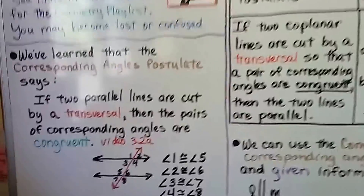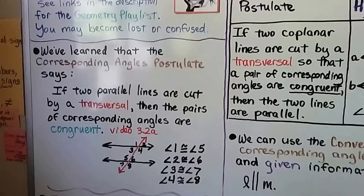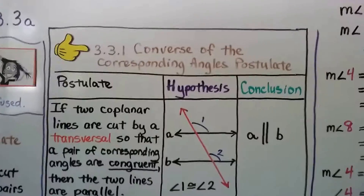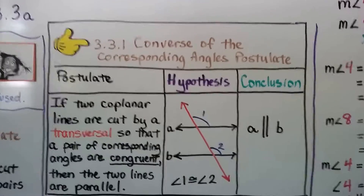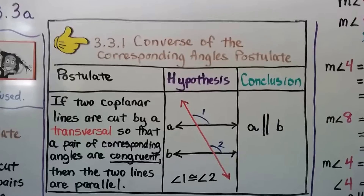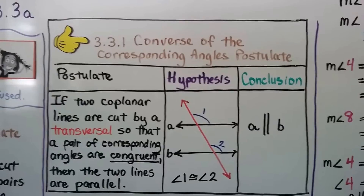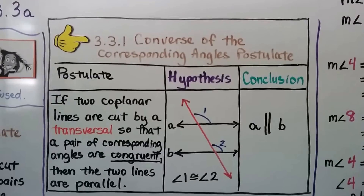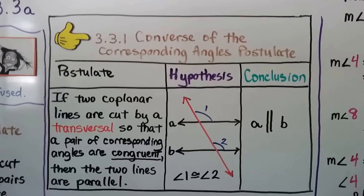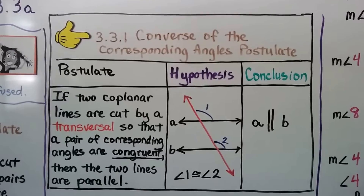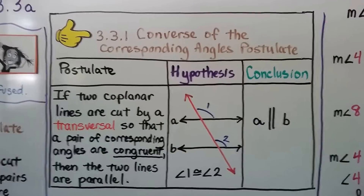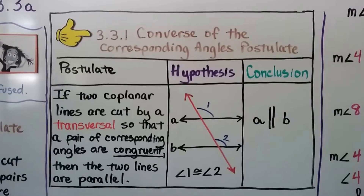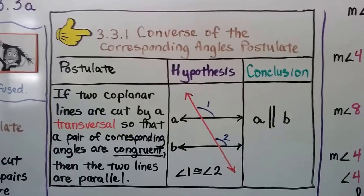We learned the Corresponding Angles Postulate in 3.2a. Now we have the Converse of the Corresponding Angles Postulate. It tells us if two coplanar lines are cut by a transversal — that red line — so that a pair of corresponding angles are congruent — 1 and 2 are congruent — then the two lines are parallel.